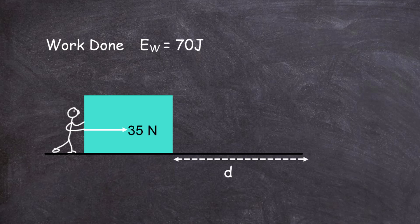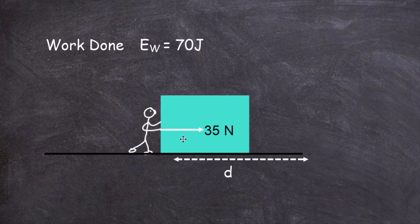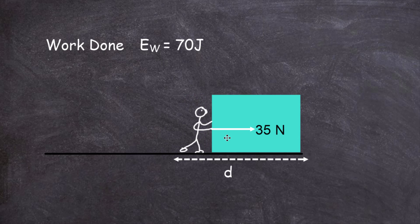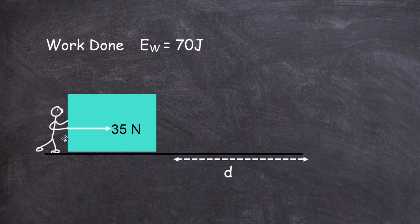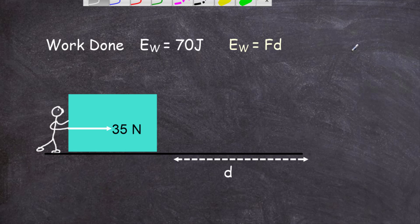Let's look at this example. The person applies a force of 35 newtons to a block and moves it through a certain distance d, and the work done on the block by the force amounts to 70 joules. Our problem is: how far did he move the block so that the work done amounts to 70 joules? We start with the basic equation: EW equals force times distance, and fill in what we know.